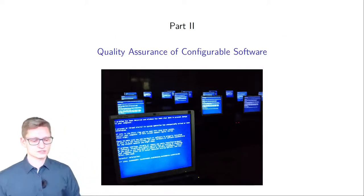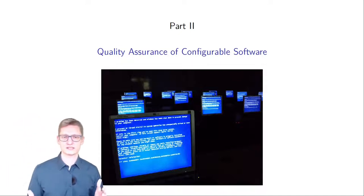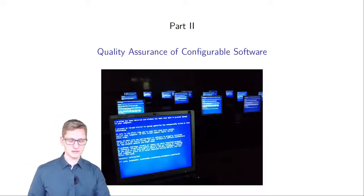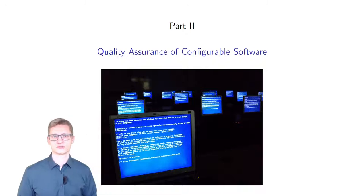So this was the first part of the talk, and the main part was we have software configuration, we have product configuration, and the main problem with configuration is we have configuration options and dependencies among them. So now in the second part of the talk, I would like to talk about quality assurance for those systems.